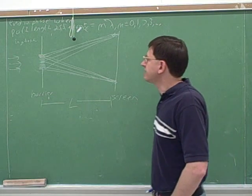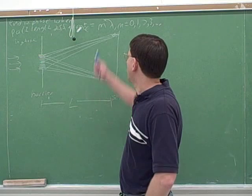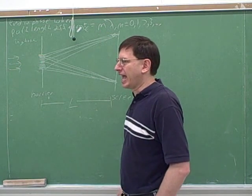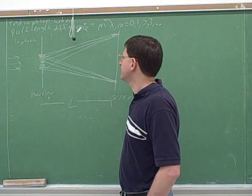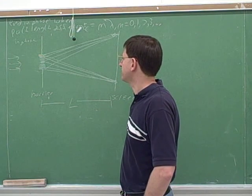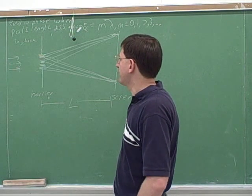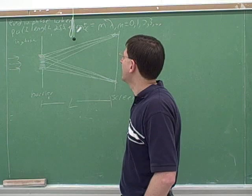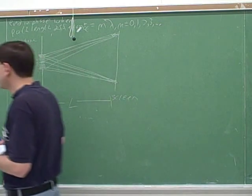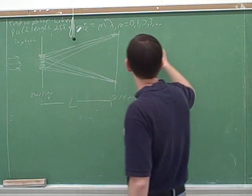It's going to be that anytime two of the beams have a path length difference that's a whole number of wavelengths, those two would interfere constructively. And anytime there's a whole number of wavelengths plus one-half wavelength difference, they would be destructive. So you can work out the math to figure out where the bright spots and the dark spots would be.